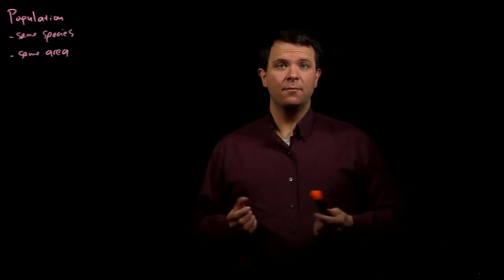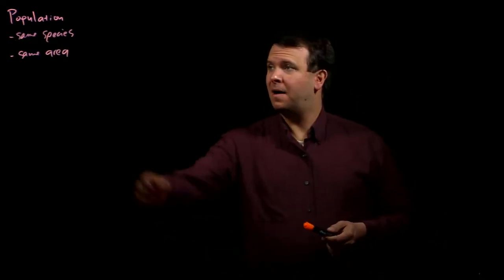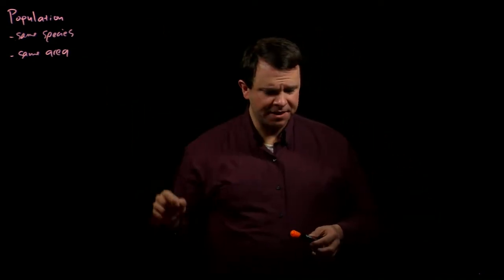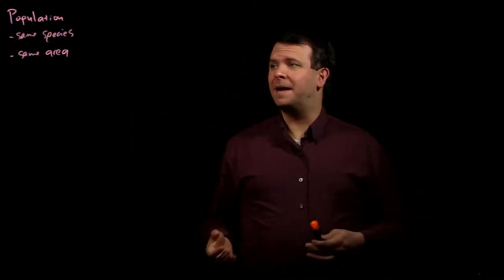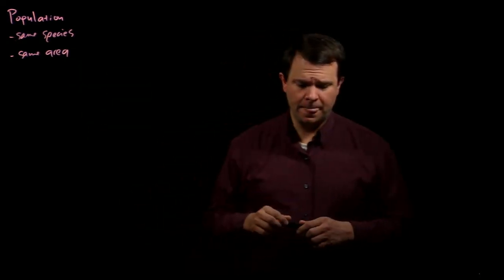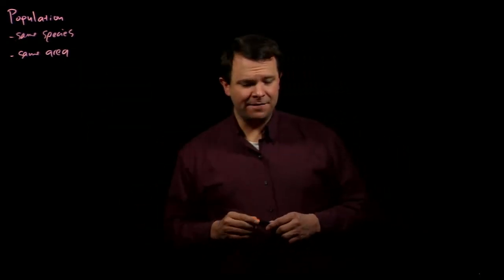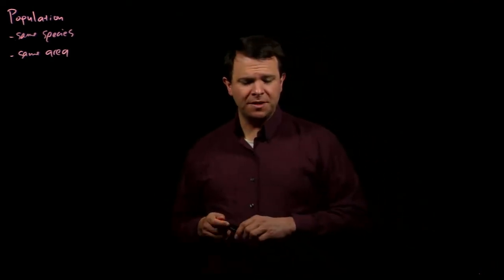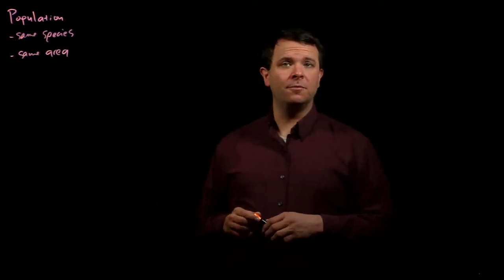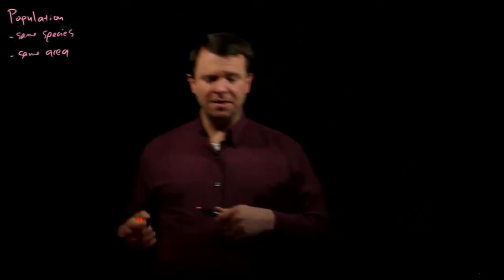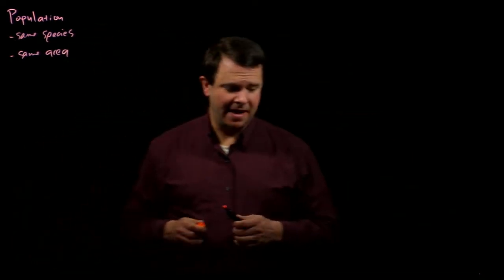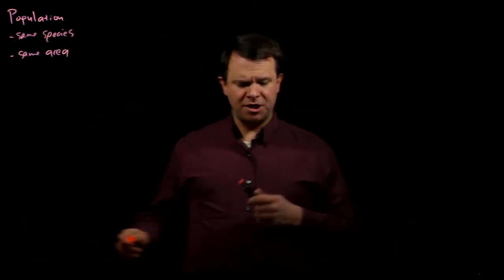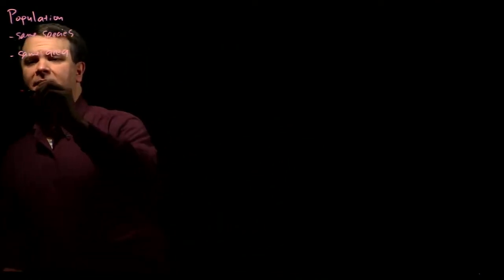For our purposes, we define a population as a group of organisms of the same species living within a prescribed geographical area. So let's say that we have a population of a thousand individuals and we're interested in an autosomal gene A, with two alleles, big A and little a. And so now let's say we genotype each individual and we get the following results.